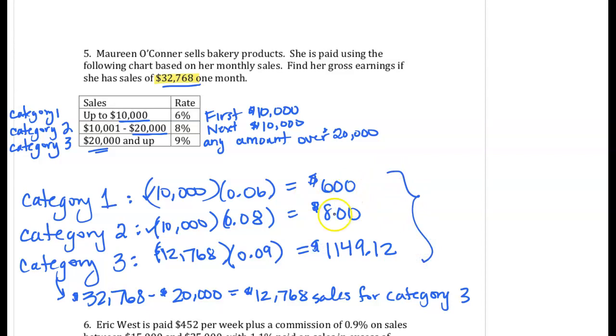When we add up our commission from all three categories, I get a total of $2,549.12.